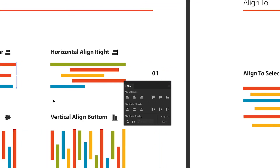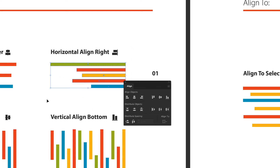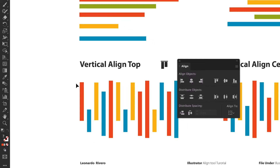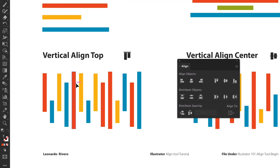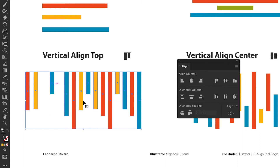With horizontal align to the right, the same thing happens — it only aligns elements horizontally, aligning them to the right. Now let's go to the vertical align tools. If I move these elements to the sides and align them to the top, they're only going to align to the top — they don't align to the sides. They're only aligned vertically.